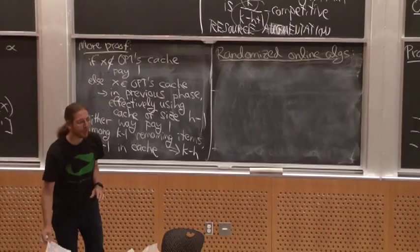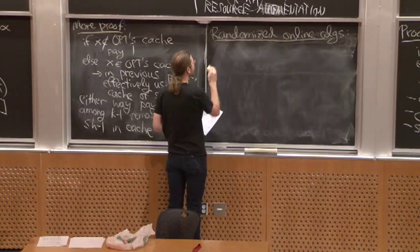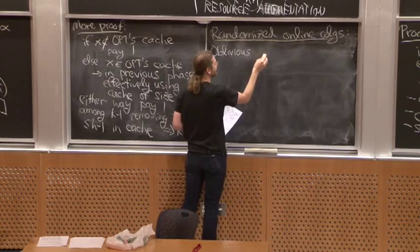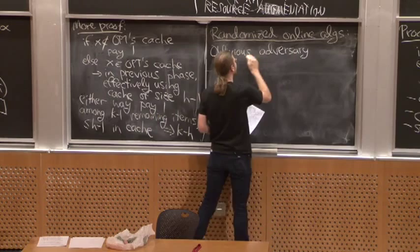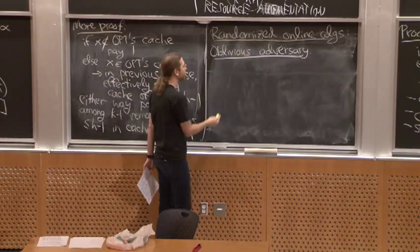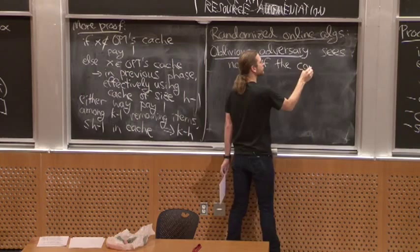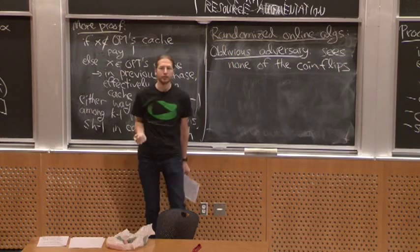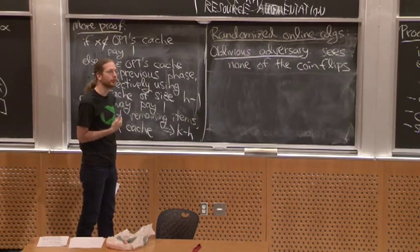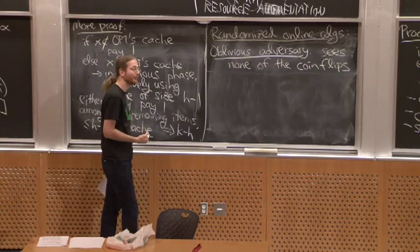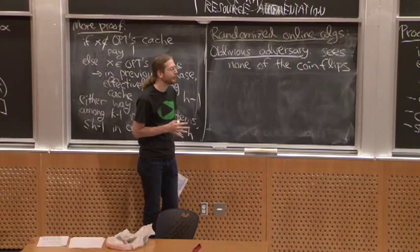This depends on your model of adversary. There are three types commonly studied. The main model is the oblivious adversary: it doesn't see your coin flips. The adversary knows what algorithm you're running, but not the outcomes of your coin flips — just that you flip some coins. Its hands are tied behind its back.